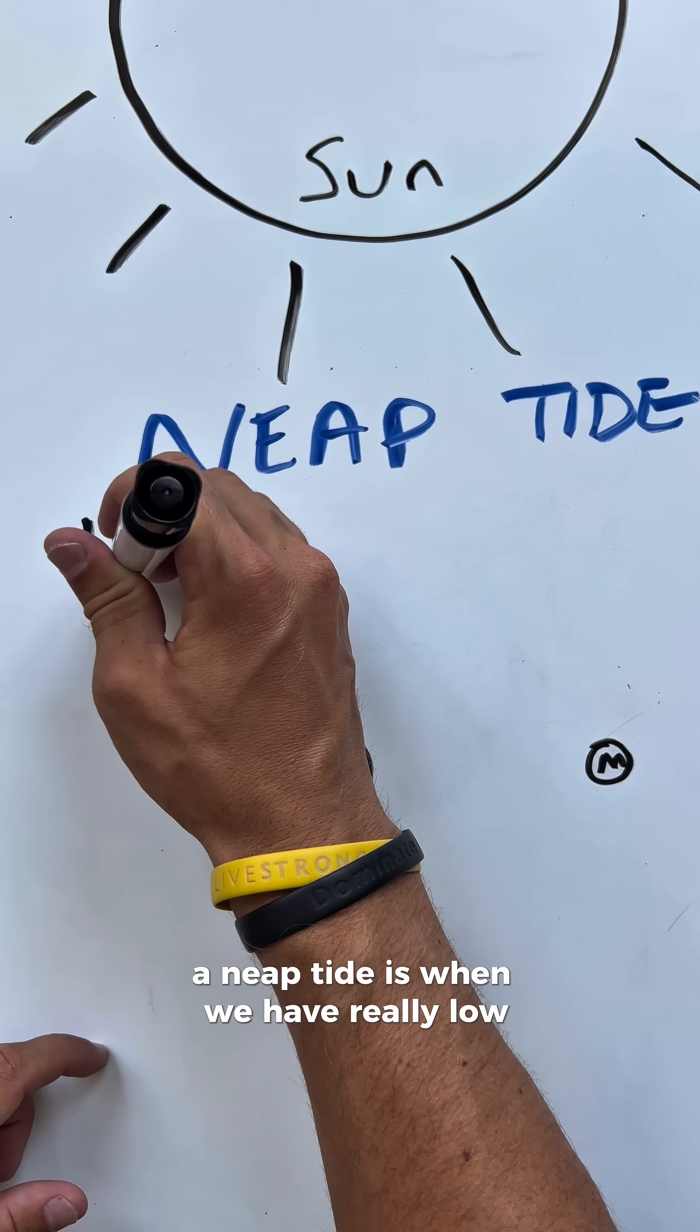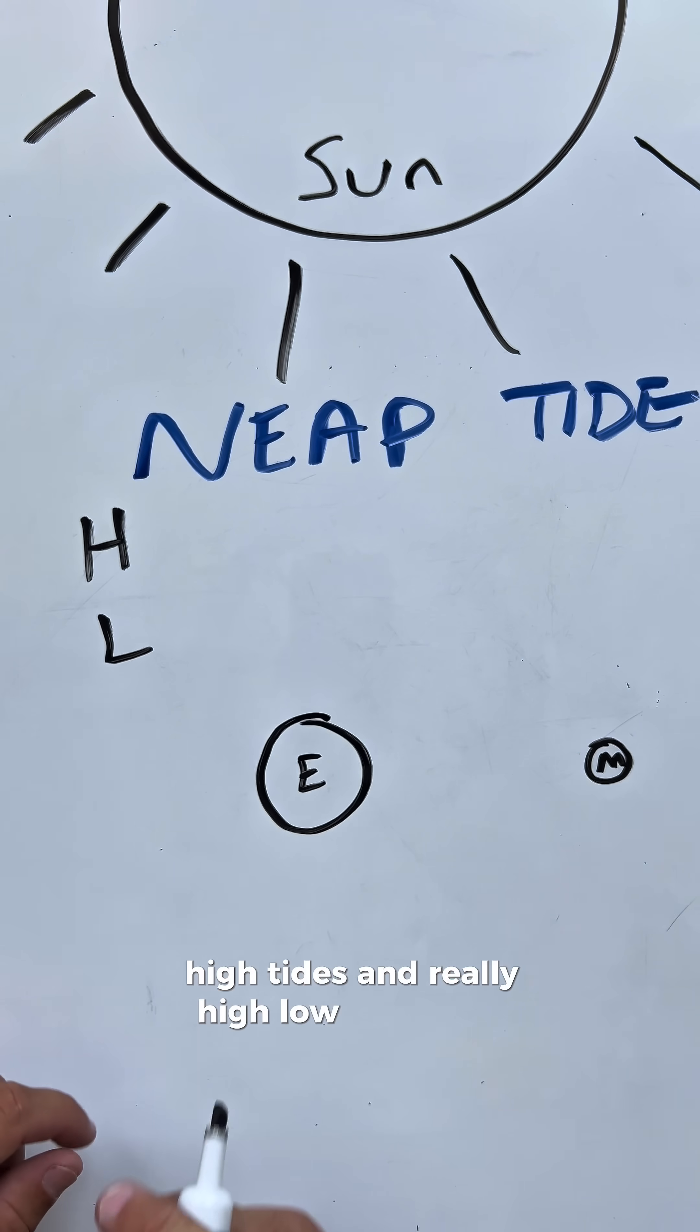A neap tide is when we have really low high tides and really high low tides.